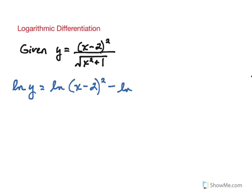Now I'm going to rewrite that square root as an expression — x squared plus 1 raised to the 1/2. We can use the laws of logarithms again on the right side. Remember that each of those exponents can pop to the front.